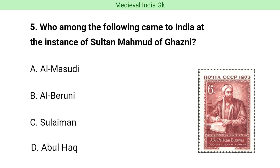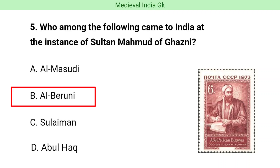Question number five. Who among the following came to India at the instance of Sultan Muhammad of Ghazni? The correct answer is option B, i.e. Al Biruni.